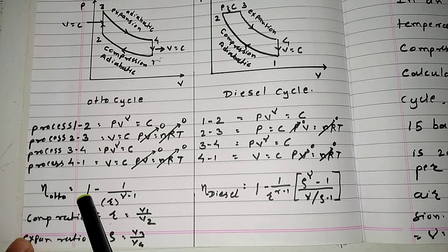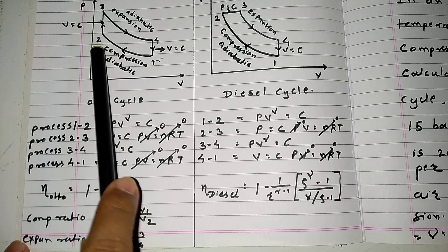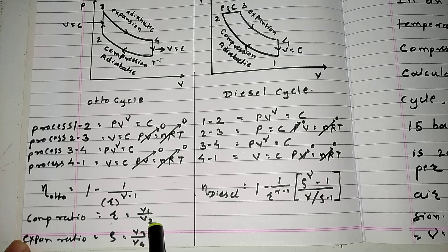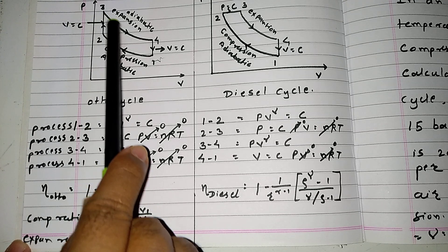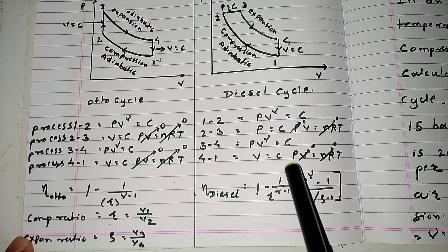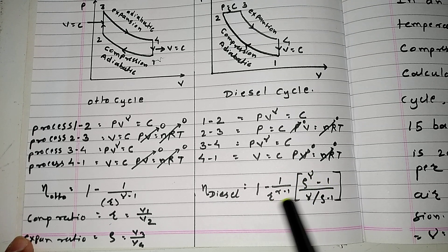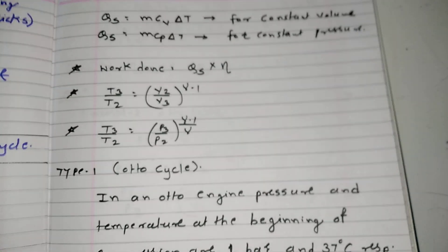To find the efficiency of the Otto cycle, the formula is: 1 minus 1 upon r raised to gamma minus 1, where r is the compression ratio (V1/V2) for process 1 to 2. The expansion ratio is rho = V3/V4. For the diesel cycle efficiency, the formula is: 1 minus 1 upon r raised to gamma minus 1, multiplied by (rho raised to gamma minus 1) upon (gamma times rho minus 1).